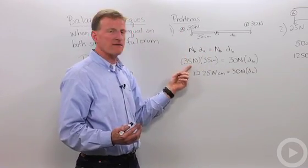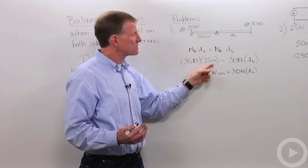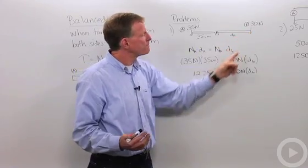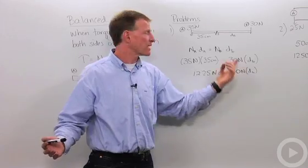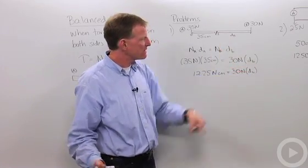My force A is 35 newtons, my distance A is 35 centimeters, my force B is 30 newtons, and my distance B, I don't know, that's what I need to solve for. So I'm just going to leave that distance B.